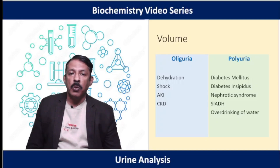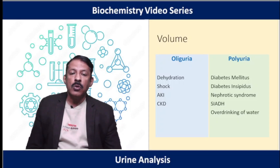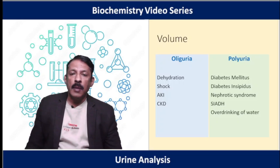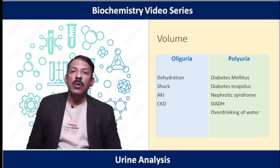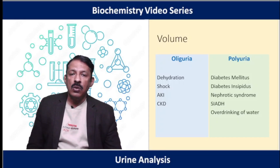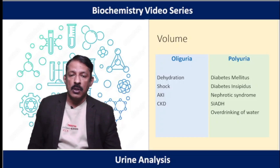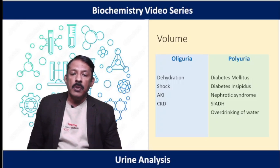Polyuria is when urine output is excess, seen in diabetes mellitus, diabetes insipidus, nephrotic syndrome, and syndrome of inappropriate ADH secretion. In diabetes mellitus, osmotic diuresis occurs as glucose draws water out, causing polyuria. In diabetes insipidus, the ADH hormone is not functioning adequately, so the body cannot concentrate urine, resulting in large volumes of dilute urine. Nephrotic syndrome involves protein loss causing osmotic diuresis. SIADH usually follows brain surgery.